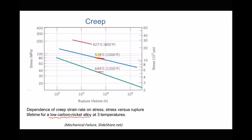So we have a line for 649 degrees C, a line for 538, and a line for 427 degrees C. And if we take a stress of say 50 MPa on our y-axis, then we can see at 649 degrees C the component is likely to rupture in 10 to the 3 hours, or 1000 hours. Whereas if we reduce the temperature to 538 degrees C, still using 50 MPa, then now we can see the component is likely to last 10 to the 5 hours, or 100,000 hours.